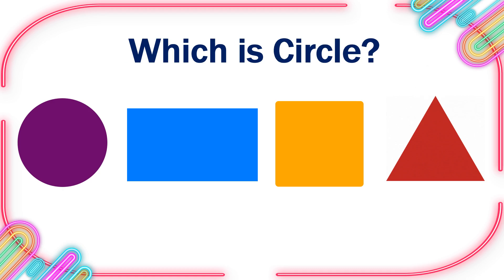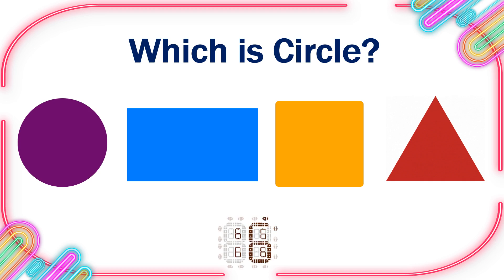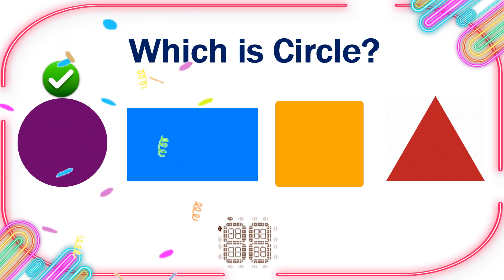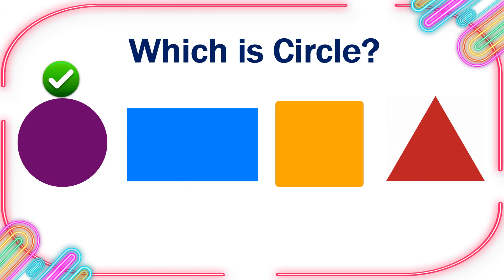Which is Circle? 10, 9, 8, 7, 6, 5, 4, 3, 2, 1, 0. This is the right one.